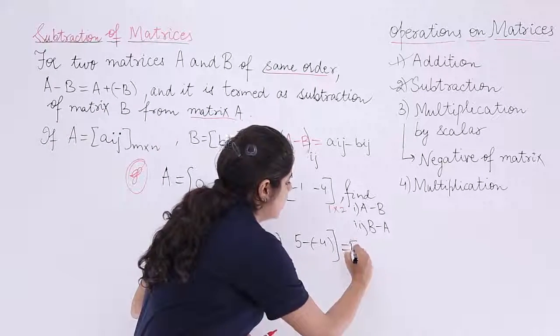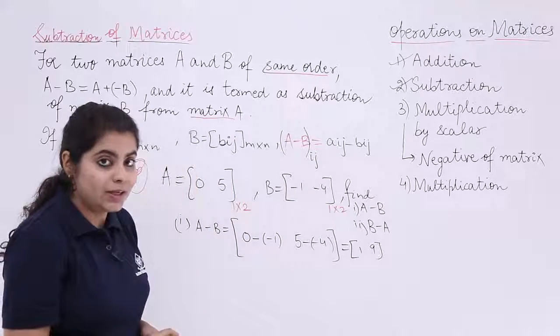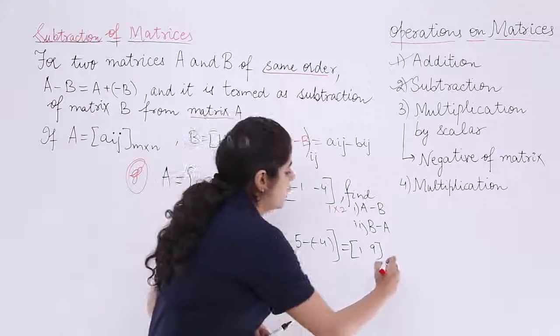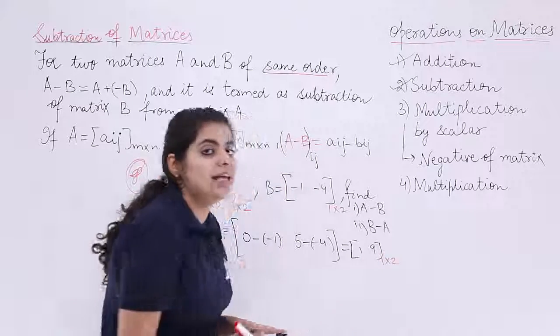So the answer is nothing but 1 and 9, which is what type of a matrix? Which is the same order matrix having one row, two columns as the individual matrices.